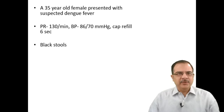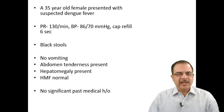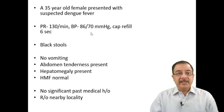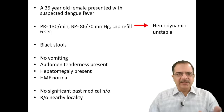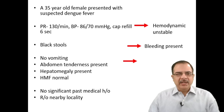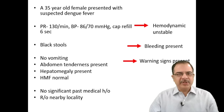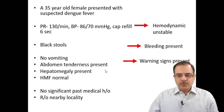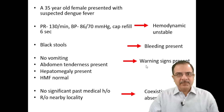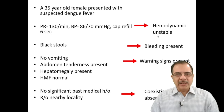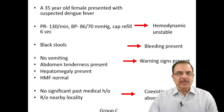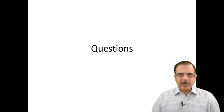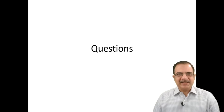Case 4: A 35-year-old female with suspected dengue fever. Pulse rate 130, BP 86/70 — pulse pressure less than 20, capillary refill time increased, hemodynamically unstable. Black stools indicate a bleeding episode. Hepatomegaly and abdominal tenderness are present. This patient is hemodynamically unstable with bleeding and warning signs — Group C, hypotensive shock. Admit to emergency. Any questions or feedback can be put in the comment section. Thank you.